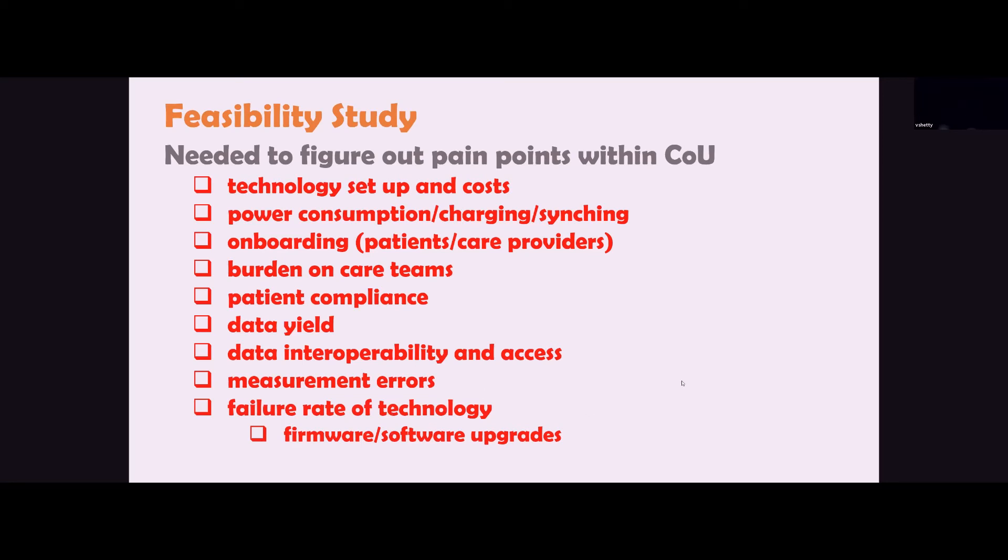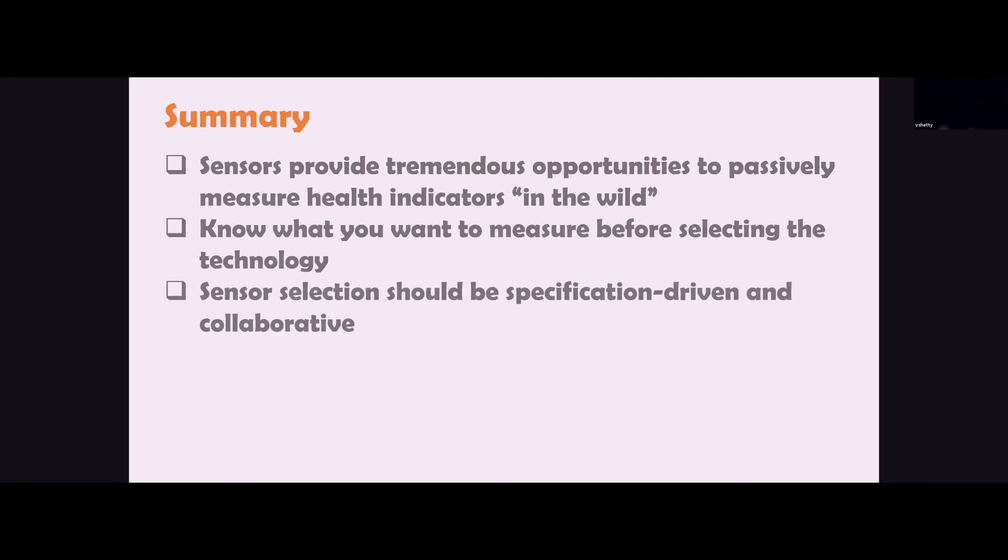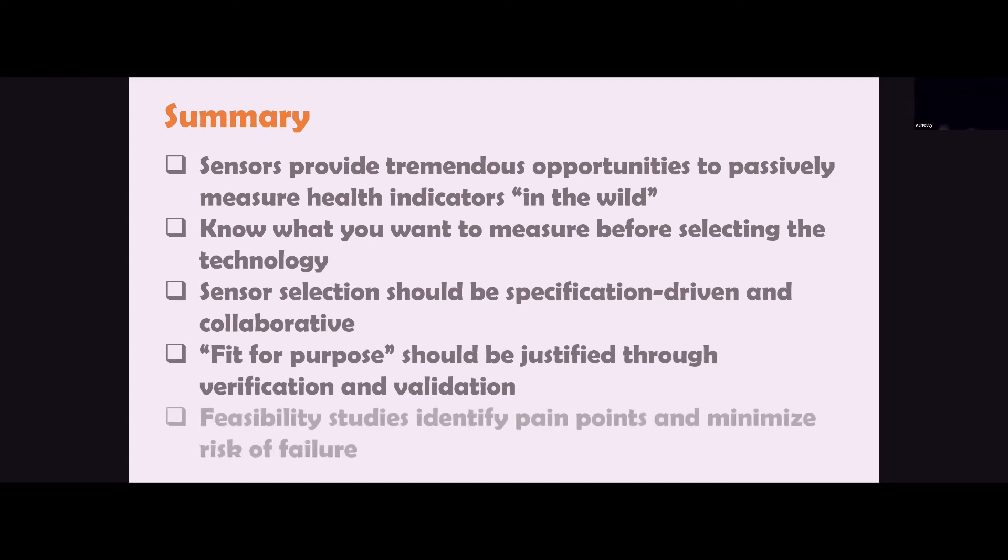In summary, sensors do provide tremendous opportunities to measure health indicators in the wild. Know what you want to measure before selecting the technology. Sensor selection should be very specification driven and collaborative. Make sure it's a multidisciplinary effort and your fit for purpose should be justified upfront through verification and validation. And most importantly, I cannot emphasize this enough, make sure you have run-in studies to identify pain points and minimize the risk of failure.